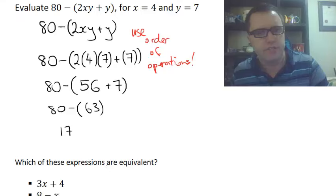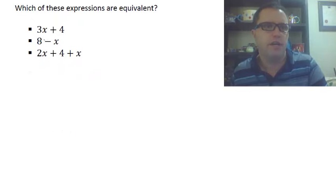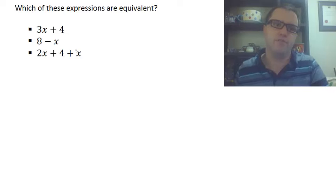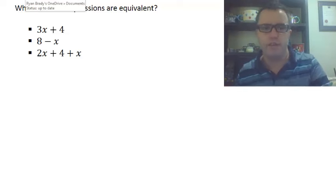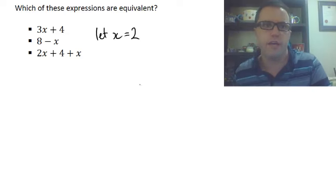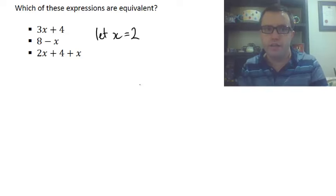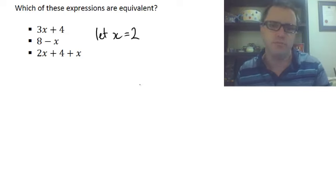Which of these expressions are equivalent? We have 3x plus 4, 8 minus x, and 2x plus 4 plus x. So how do we tell? Remember I said above. To see if some expressions are equivalent, you just substitute the same number. So we're going to write off to the side here. Let x equal 2. You can make x equal 1. You can make x equal 0 if you wanted to and see how that worked. We're going to go with x equals 2. Pretty easy.